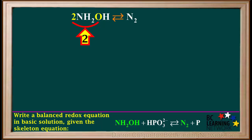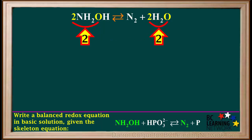Now for oxygen, we have two oxygen atoms on the left and no oxygen atoms on the right, so we add two H2O to the right. Now we have two oxygen atoms on both sides, so oxygen is balanced.